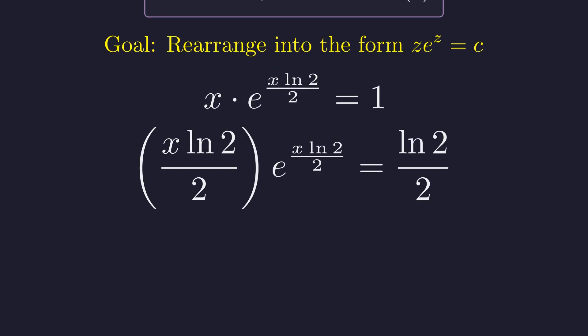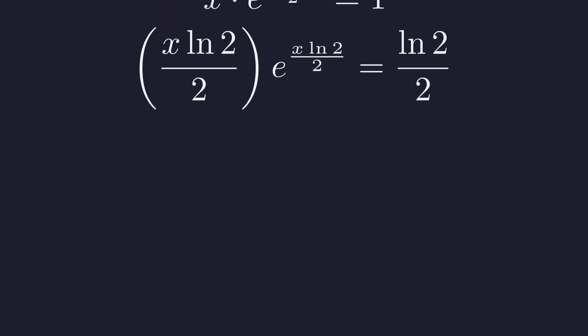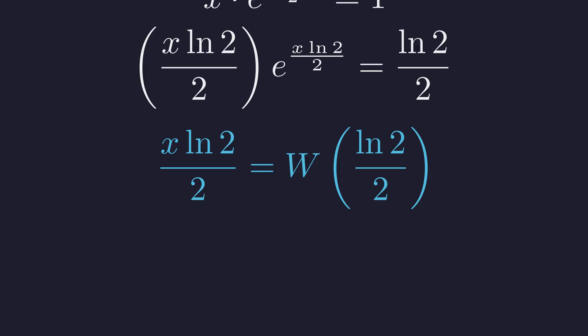This gives us the exact z e to the z equals c form, where z is x times natural log of 2 over 2. Now we apply the Lambert W function to solve for the expression z. Finally, we can isolate x algebraically. This provides the exact symbolic form of our positive solution.